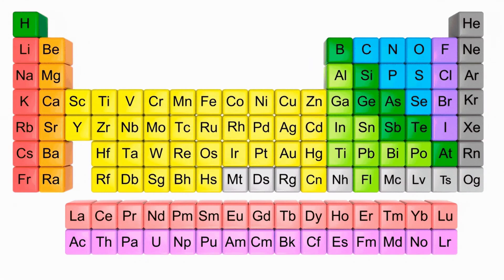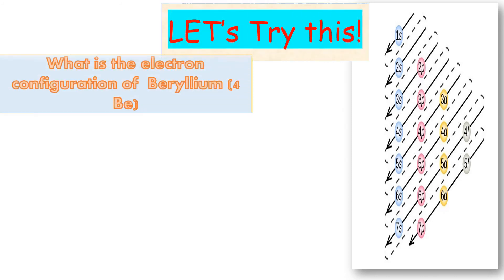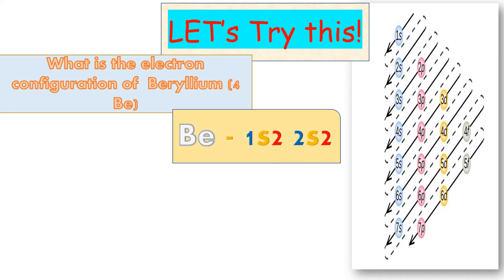The periodic table will help you identify the location of an element. Let's try this. What is the electron configuration of beryllium? The atomic number of beryllium is 4, so we're looking for 4 electrons. Using the electron configuration mnemonic device, we follow the pattern starting with the lowest energy level, which is 1s. Since the S sublevel can only hold a maximum of 2 electrons, we start with 1s², then move to 2s². So the electron configuration of beryllium is 1s² 2s².